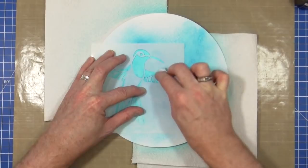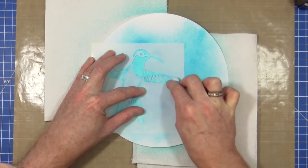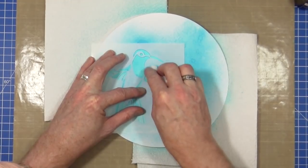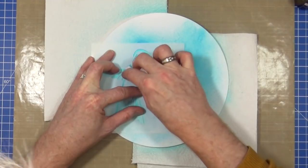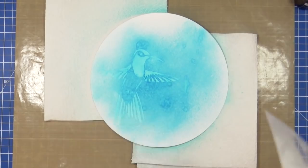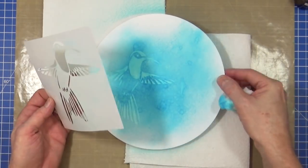So I'm just lifting that colour back off. I'm just pressing into the areas of the stencil to lift the colour. Just being very gentle, not pushing too hard.